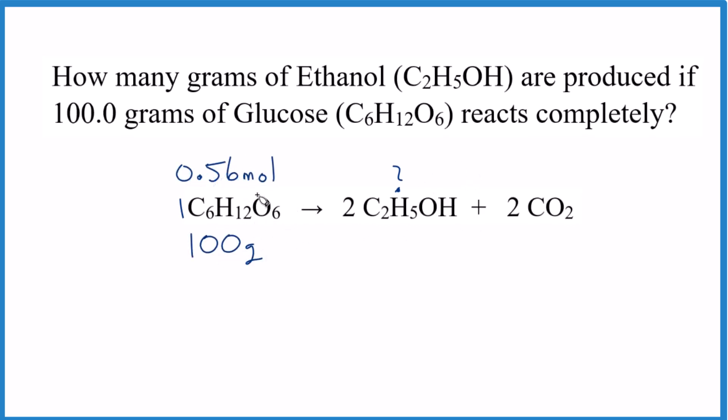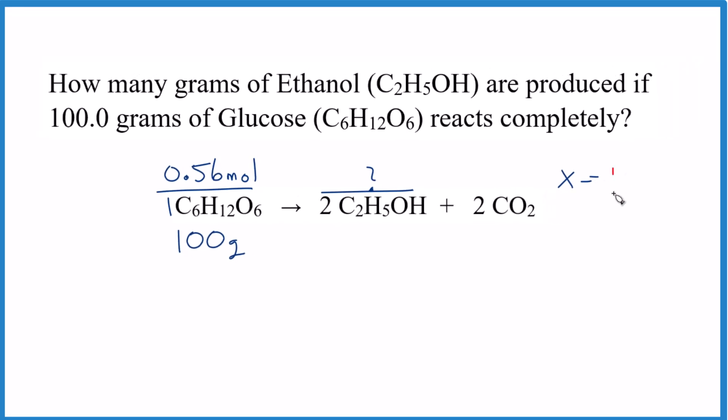We said 100 grams of glucose was 0.56 moles. So we could just set up a ratio: 0.56 is to 1 as X is to 2, and then we would just solve for X here. We cross multiply, 1 times X equals X.